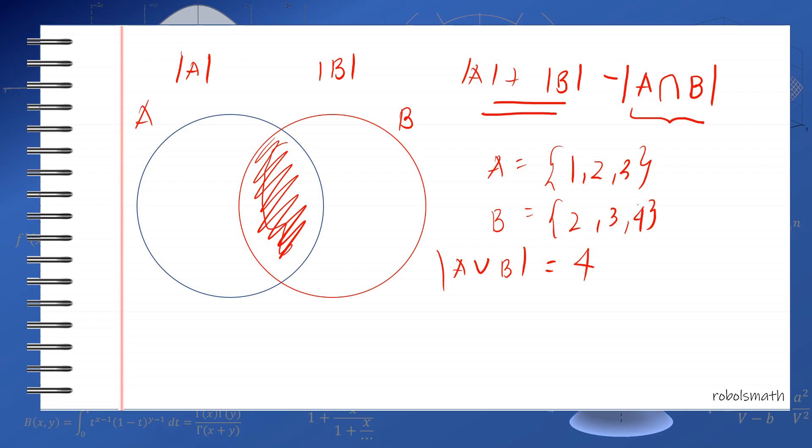But let's do it using the principle of inclusion and exclusion. First, you count A, which has 3 elements. Then B, which also has 3, so that's 3 plus 3. Minus how many are common to them? The common elements are 2 and 3, so that's 2. So 3 plus 3 minus 2 is equal to 4. And we're done. Simple. The idea of PIE is simple.